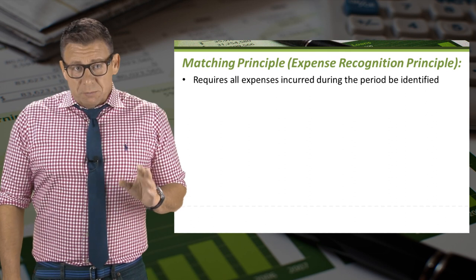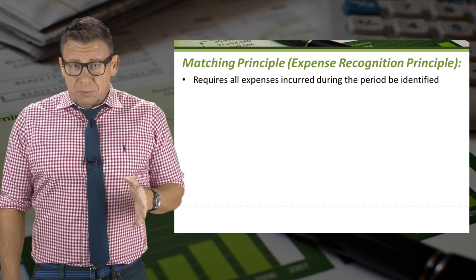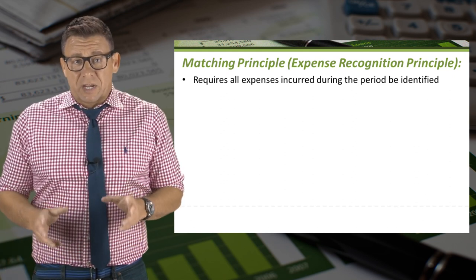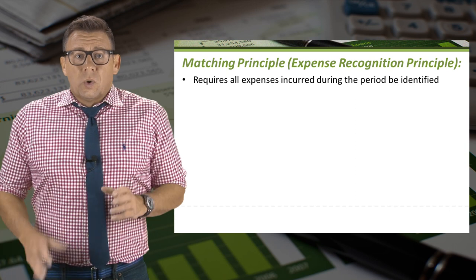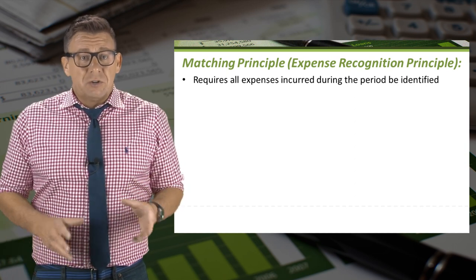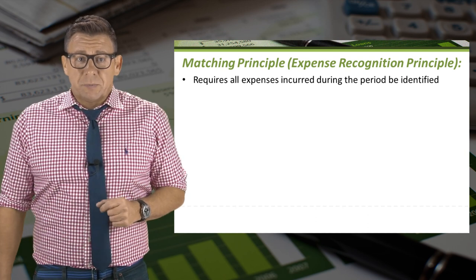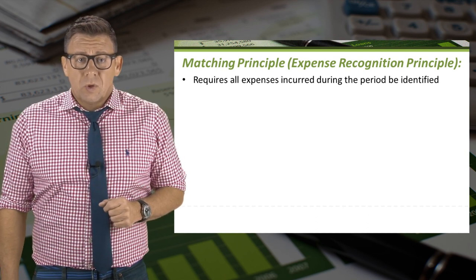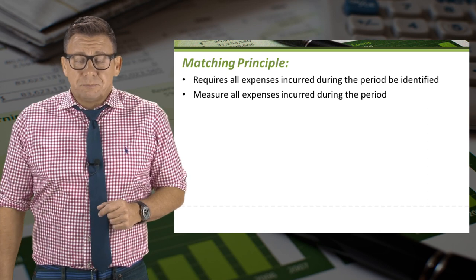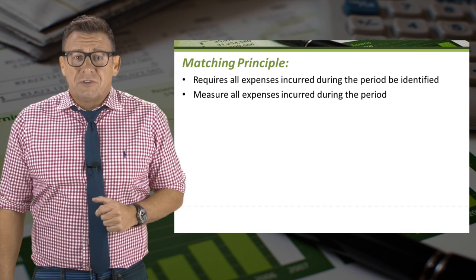The last one is an important principle similar to revenue recognition. The matching principle, which is now more commonly known as the expense recognition principle, requires all expenses incurred during the period to be identified. We can't omit expenses just because we don't want to record them. Once we have identified them, we need to measure the amounts. Sometimes we know the amount of the expense; other times we have to estimate it.